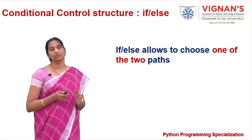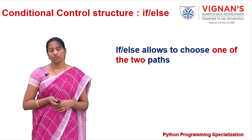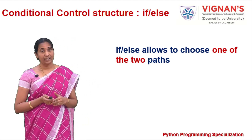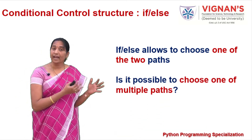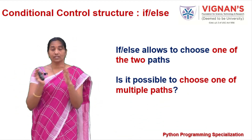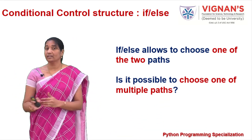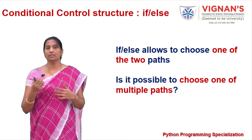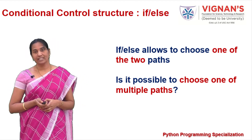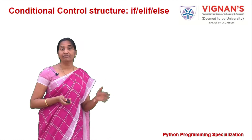Can we have more than two paths of execution and choose one among them? Of course yes. Python supports if-elif-else structure to choose one of multiple paths of execution.